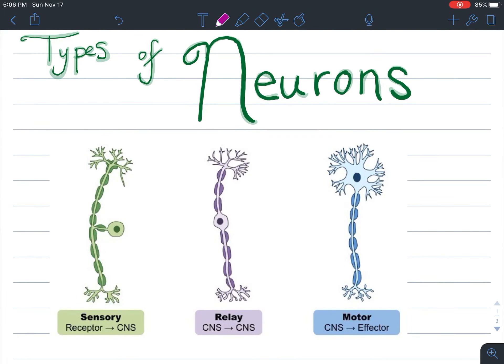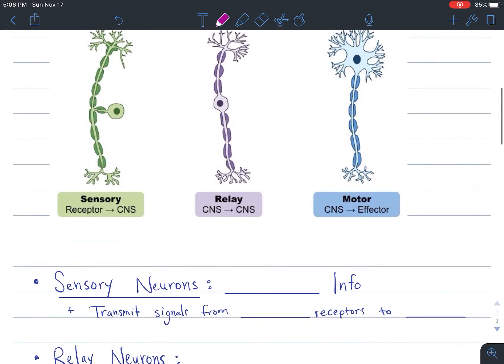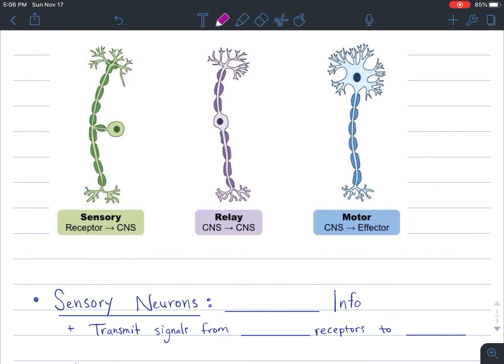Now that you've got this handout taped in, you can see there is a sensory, a relay, and a motor neuron. You can see that they do different things, but we're going to make some definitions here to really make sure that we've got everything written down and organized.